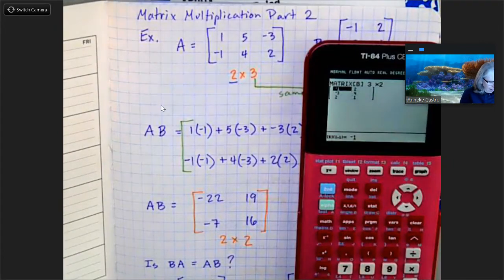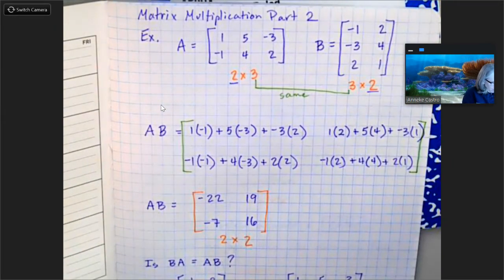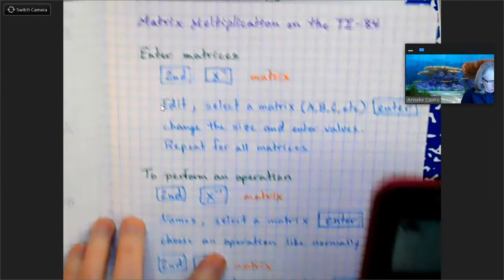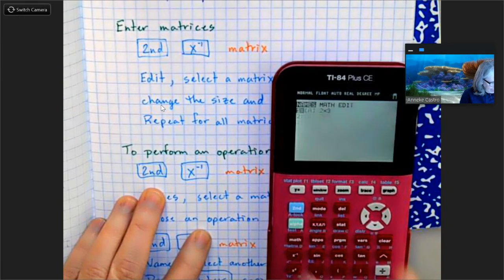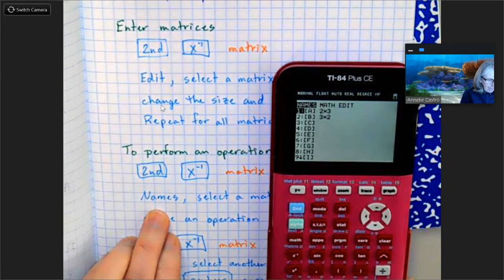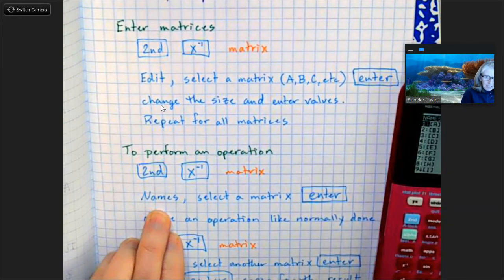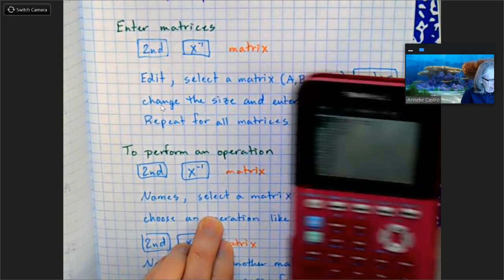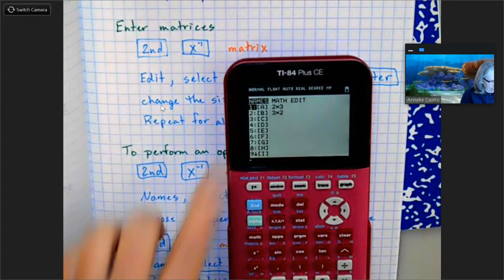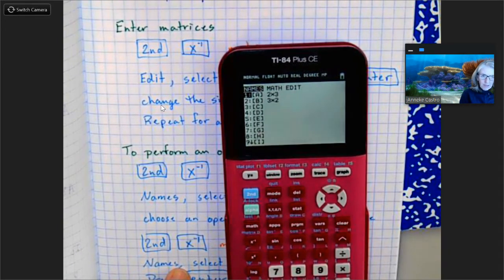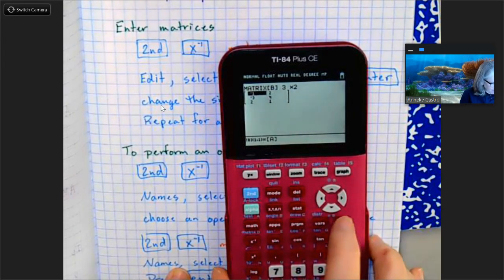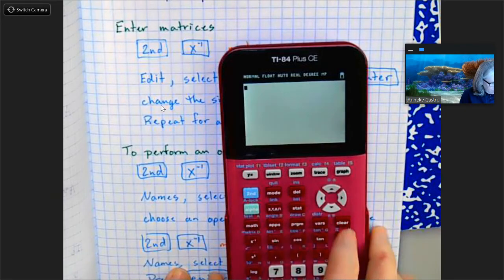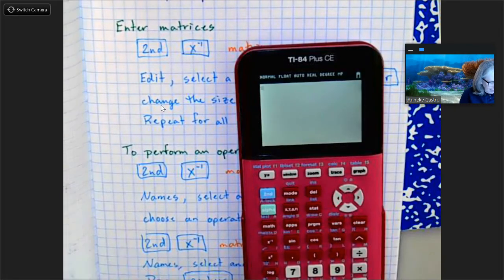So now how do I multiply them together? How do I perform an operation? What I'm going to do is I am going to go second matrix again. This time I'm on names. I'm going to select a matrix. I want A. A is good, it's already on A, so I'm going to hit enter. Oops, what just happened? Never mind.